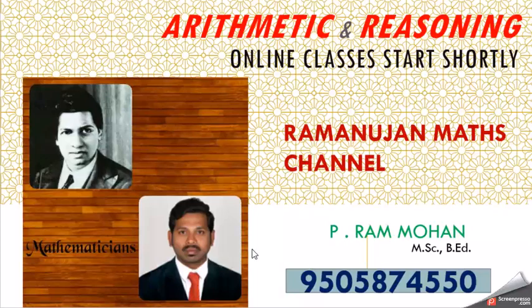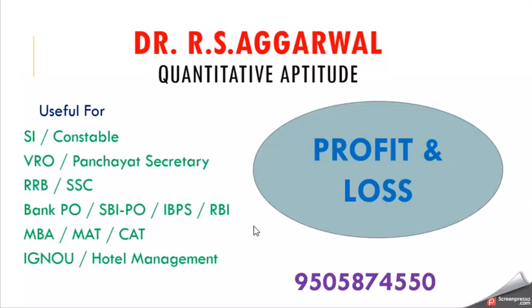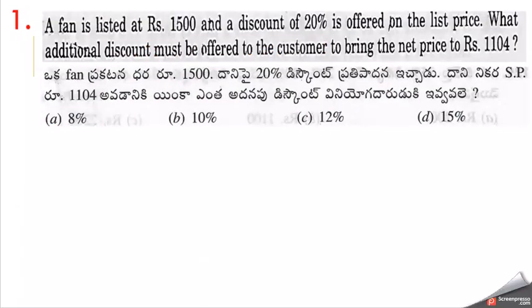Hi friends, this is Ramohan, welcome to Ramanjan Math Channel. Today's topic is profit and loss. First question: a fan is listed at 1500 rupees and a discount of 20% is offered on the list price. What additional discount must be offered to the customer to bring the net price to 1104 rupees?